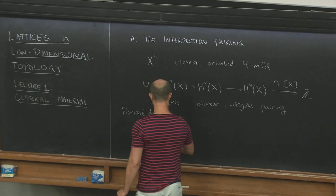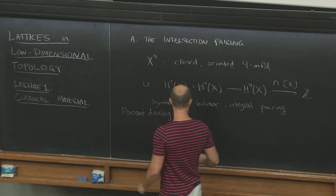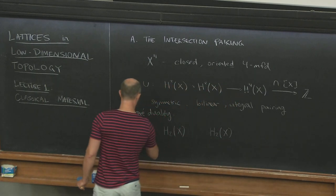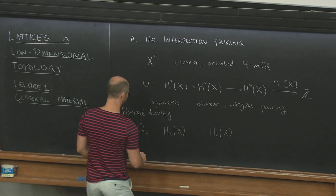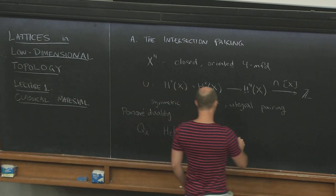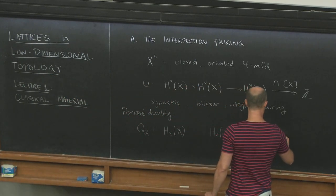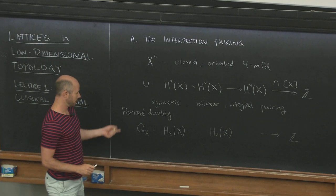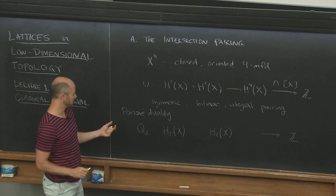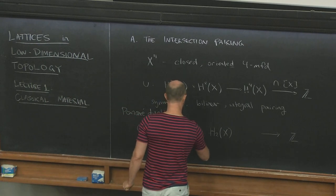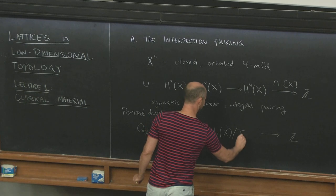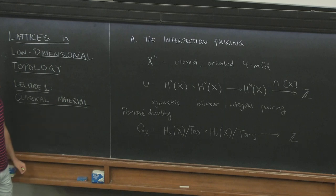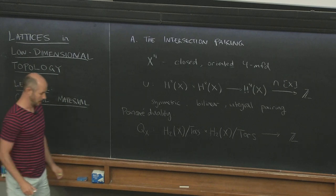Poincaré duality lets us say a couple of things. First, I can switch to looking at this as a pairing instead on second homology, thanks to Poincaré duality. When I do that, I change the notation to Q_X, and Q is to make you think of quadratic form. This maps to the integers, and I'm going to get zero if either of my entries into this pairing is a torsion class. So to get something interesting, I'll kill the torsion. I'll favor this point of view on the intersection pairing, and it'll explain why it's called the intersection pairing.